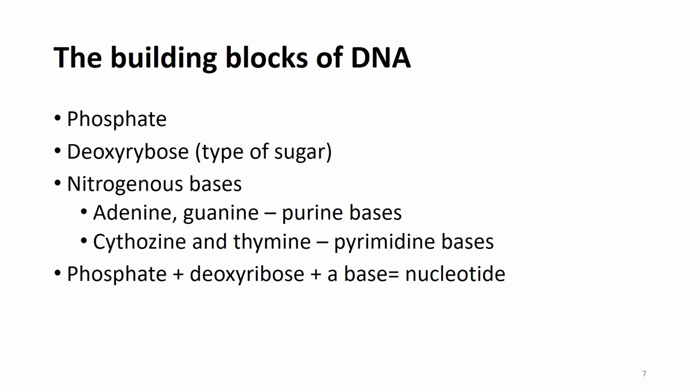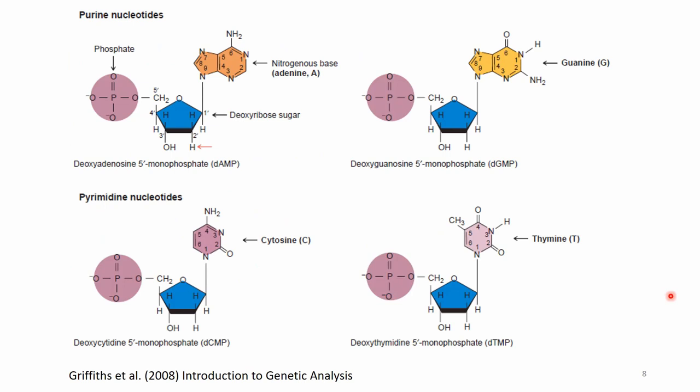These bases are grouped into the so-called purine bases — adenine and guanine — and the pyrimidine bases — cytosine and thymine. Together, the phosphate, the deoxyribose, and one of these bases build up a nucleotide. Here are the four possible nucleotides for DNA: the purine nucleotides with adenine and guanine, and the pyrimidine nucleotides with cytosine and thymine.